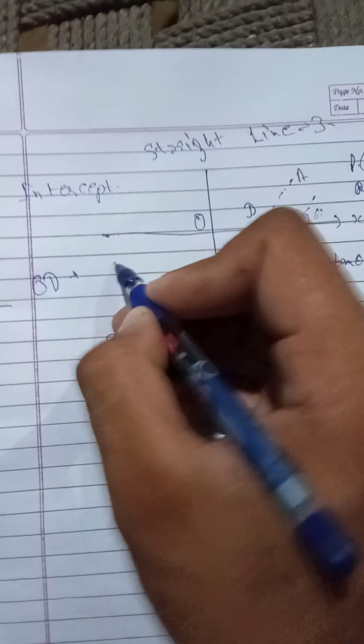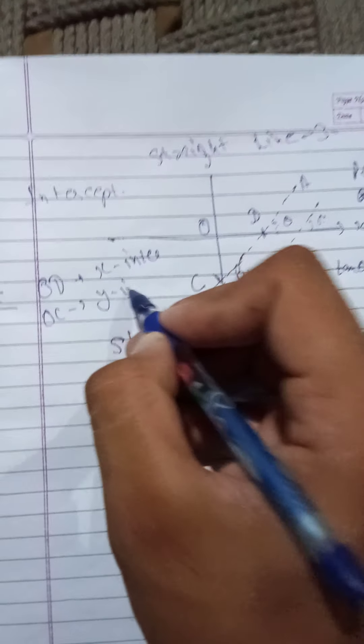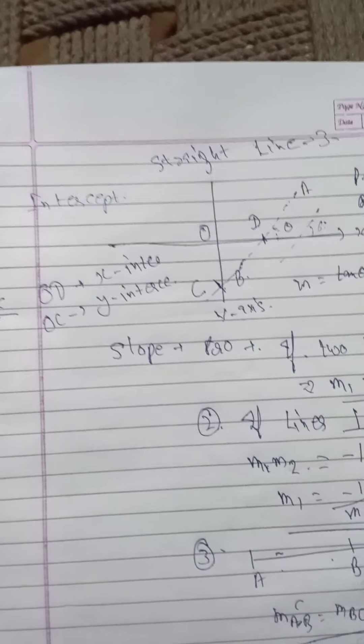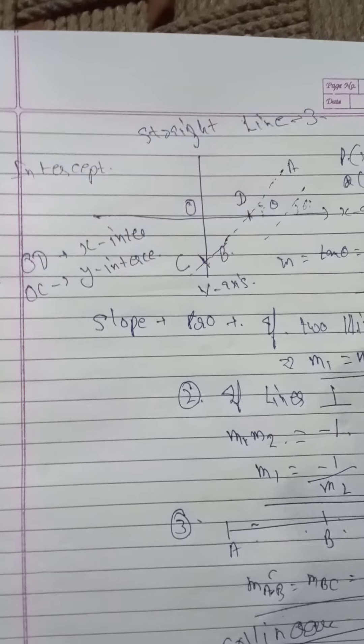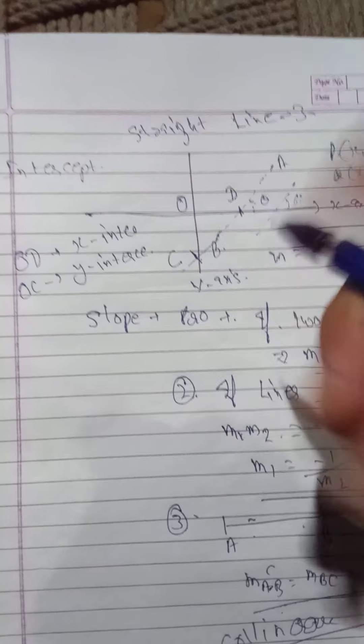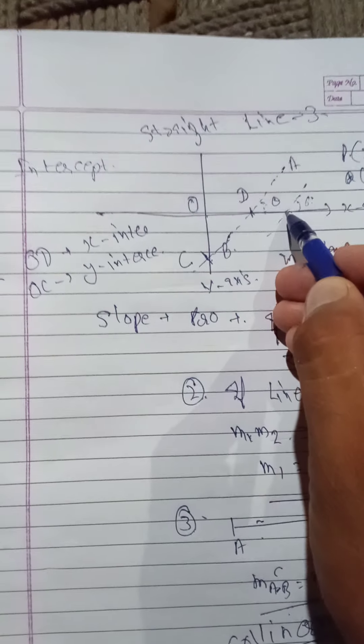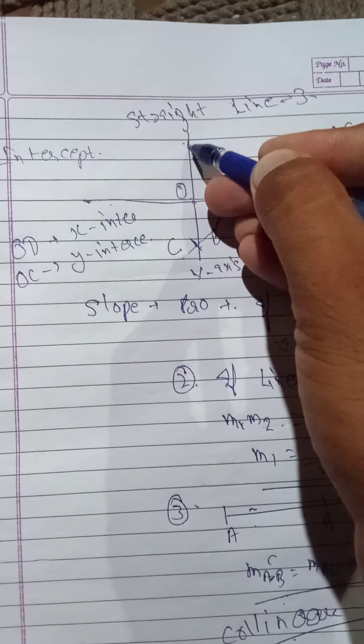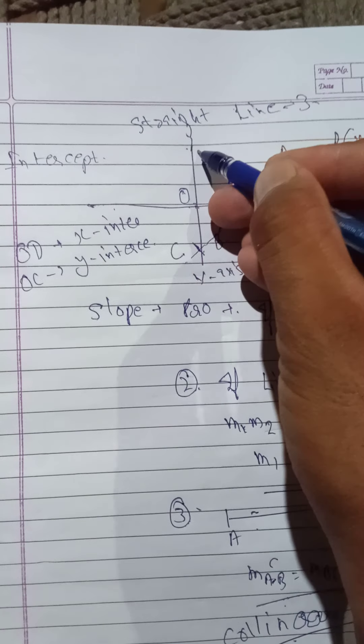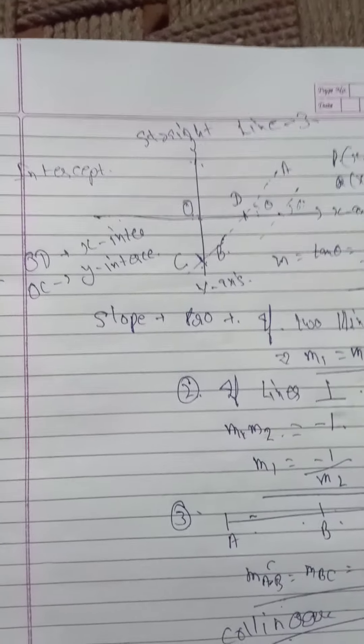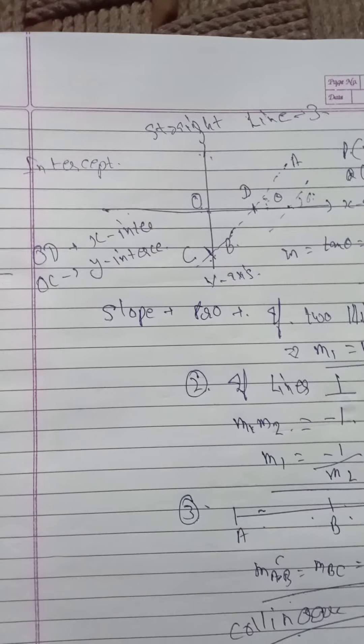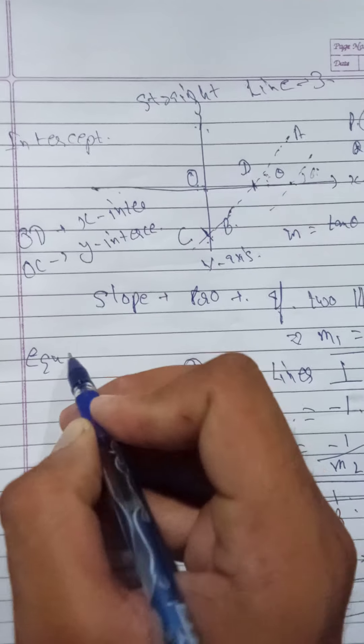And the sign convention for these intercepts is same as the planes. Right from O is taken as positive, left from O is taken as negative. On y-axis, upper from origin will be positive and down from origin will be negative. These are the sign conventions.